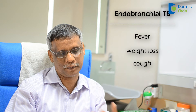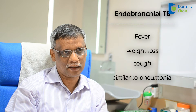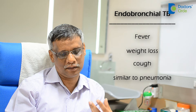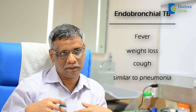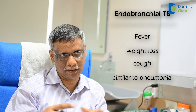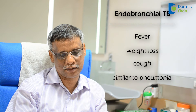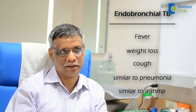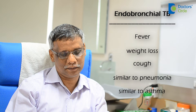When there is more severe TB involving the lungs, the child can also develop features of pneumonia. And when there are lymph nodes inside the lungs which press on the structures, they can have features similar to asthma because the airway gets compromised.